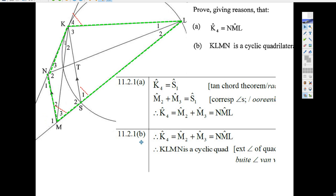I could put a circle around these four letters, and the reason is the exterior angle of a cyclic quad. I would say the converse of an exterior angle of a cyclic quad makes KLMN a cyclic quad. And there you go. There's the first part.